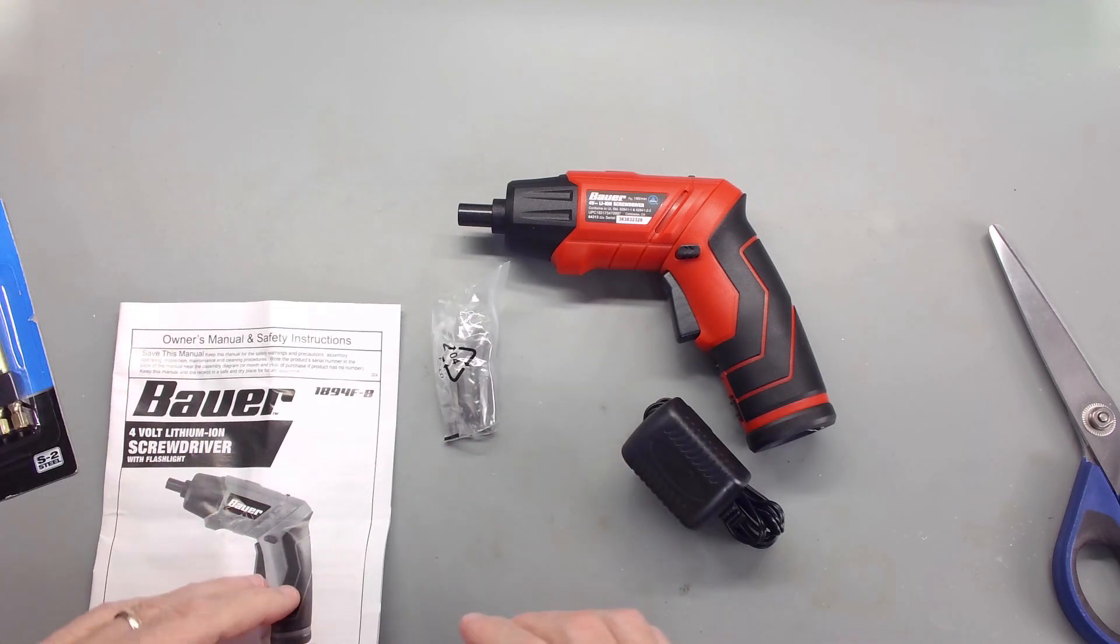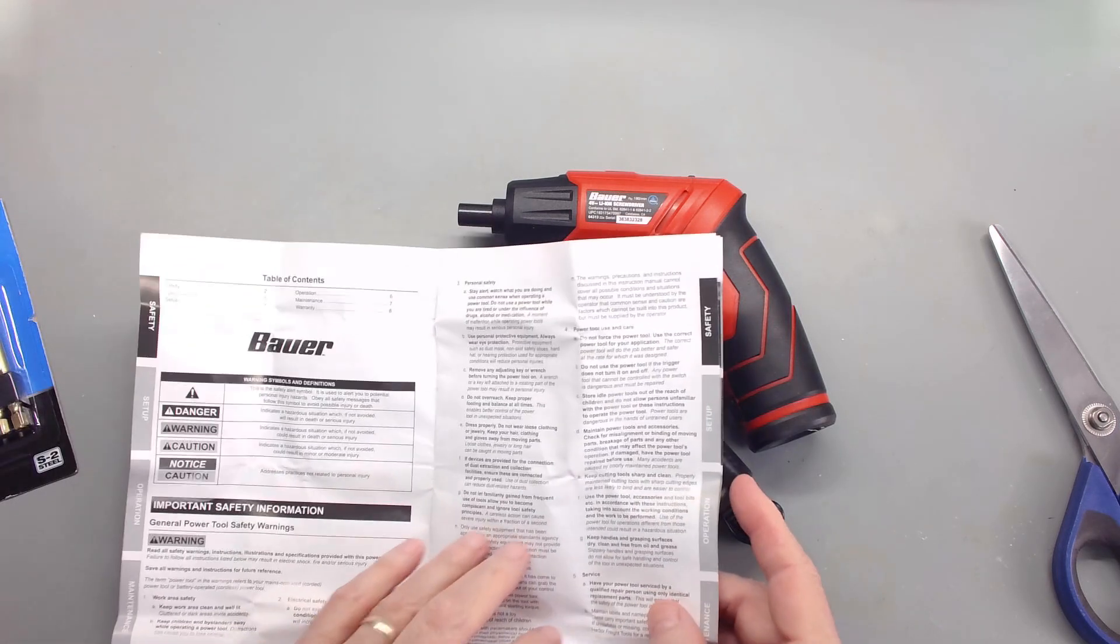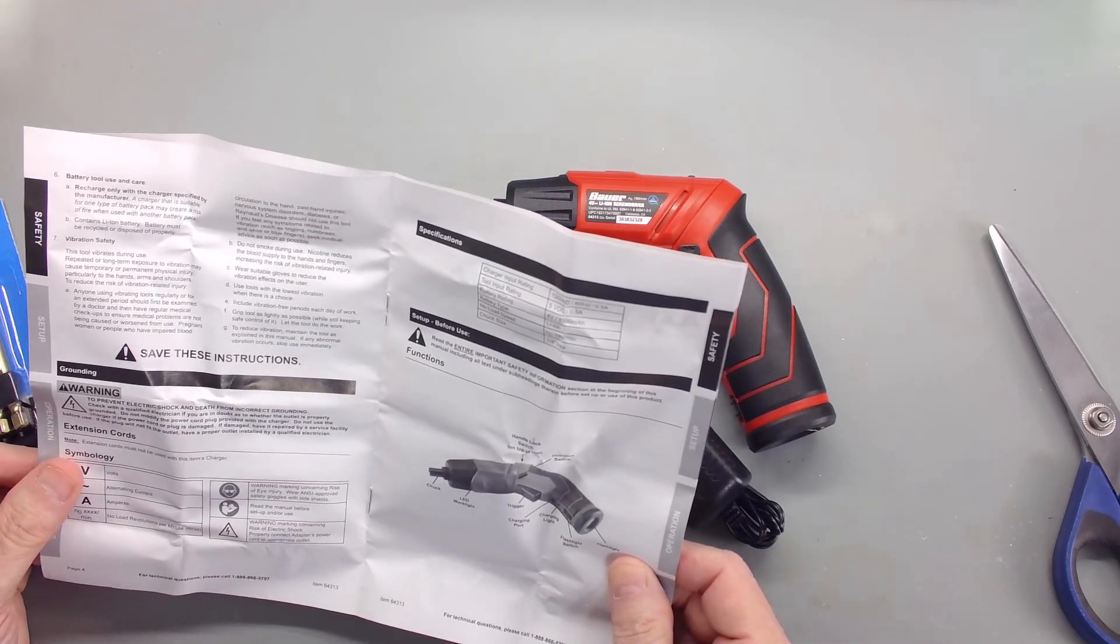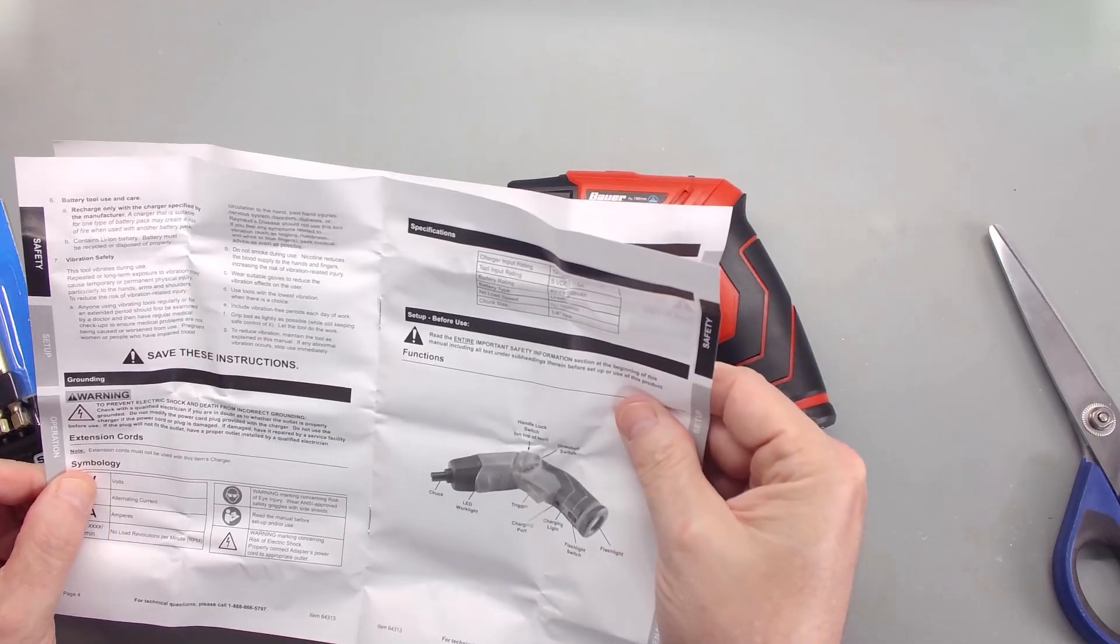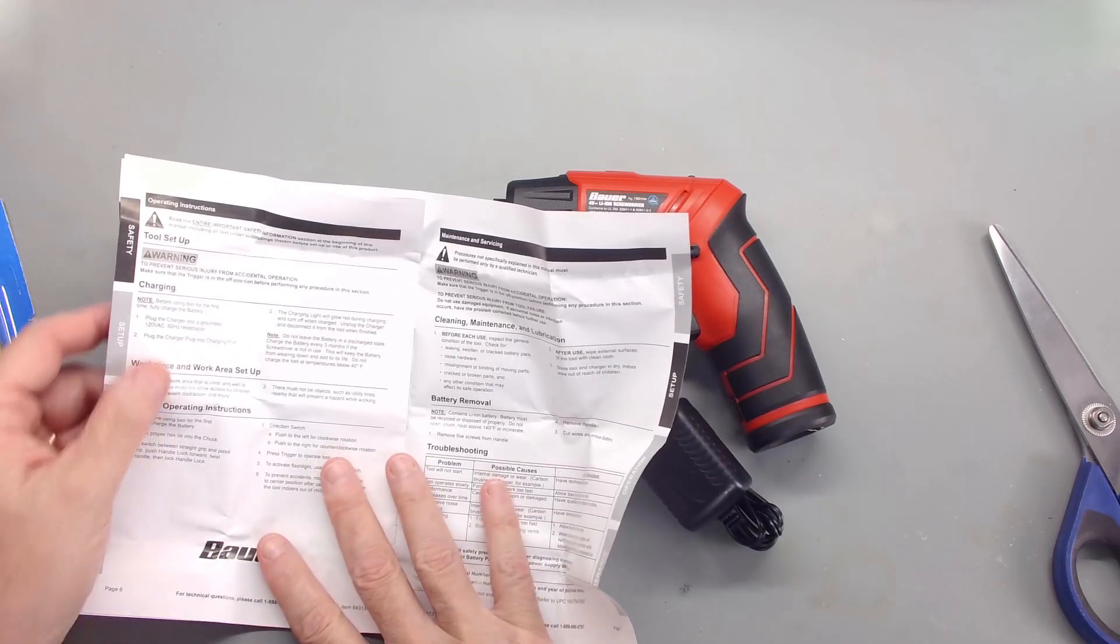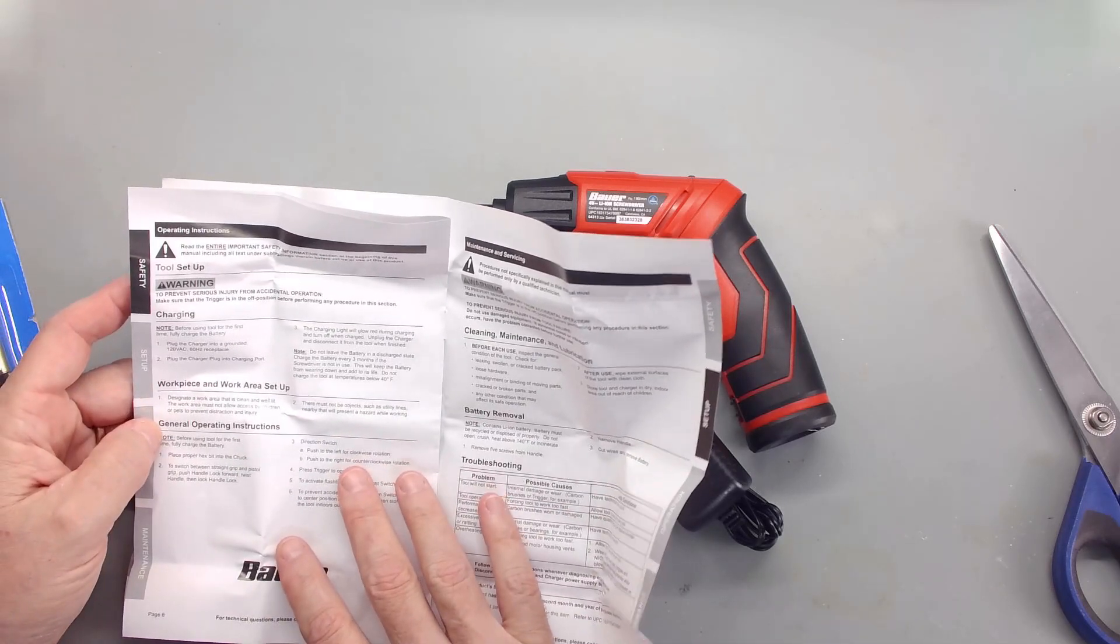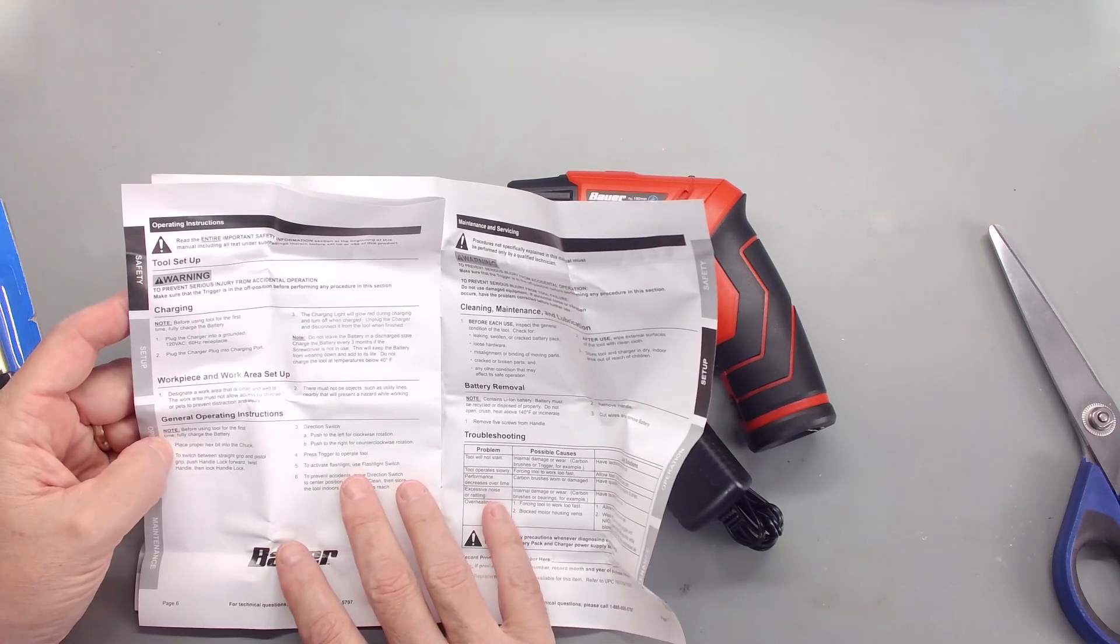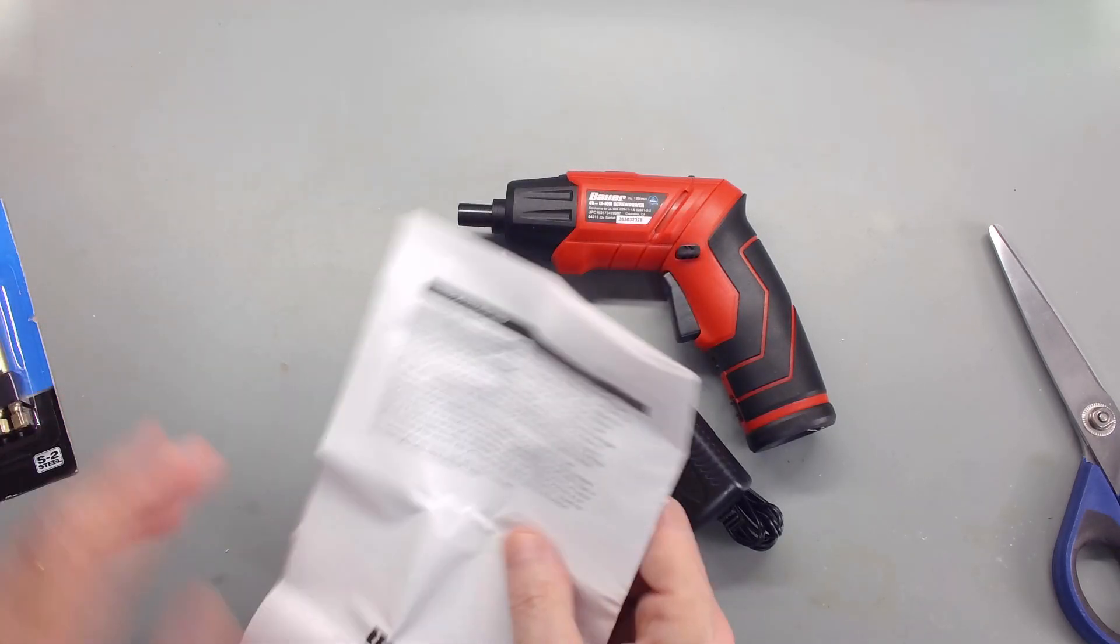Here we go with the manual. It's got the normal warnings telling us be careful. Looks pretty straightforward for the use of the tool. The first time, fully charge the battery. Charger into grounded 120 volt 60 hertz receptacle, plug the charger plug into the charging port. Charging light will glow red during charging and turn off when charged.